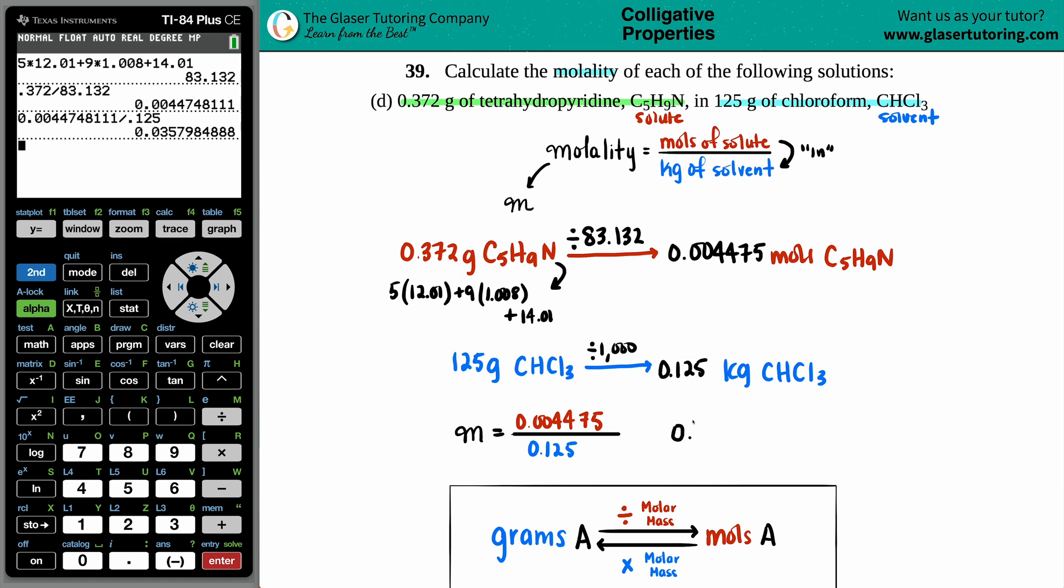And there we go. 0.36 sig figs. So 0.0358. Right? Yes, the 9 rounds the 7 up to an 8. And the unit, you could just put that little italics M as well. And that's the molality. Let's box it off. And that's the end for this one.